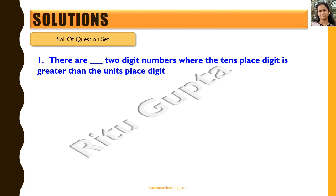The first question says: there are how many two-digit numbers where the tens place digit is greater than the units place digit? What we need to find here is how many such two-digit numbers exist where the tens place digit is greater than the units place digit. Let's see how we do this.